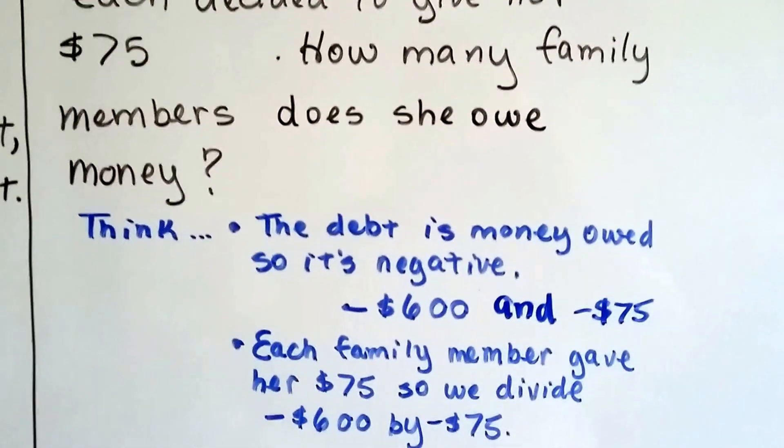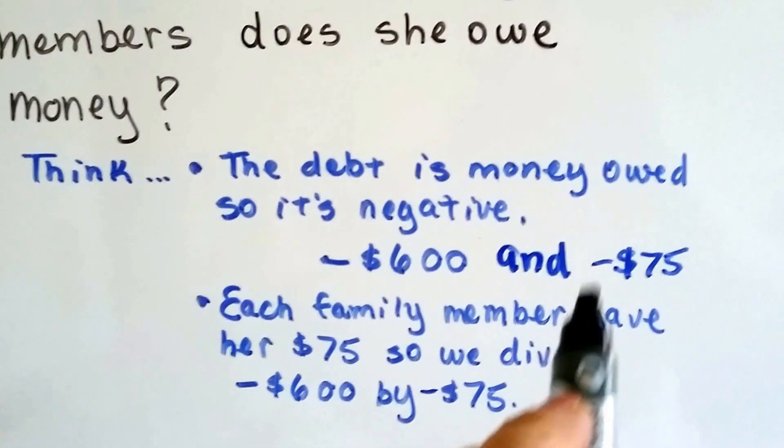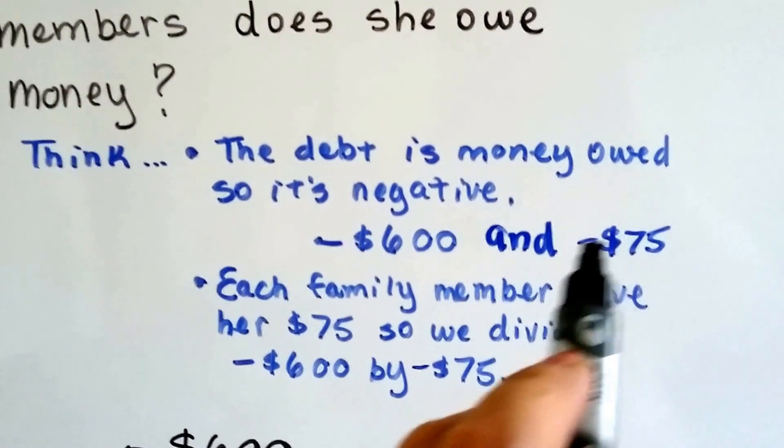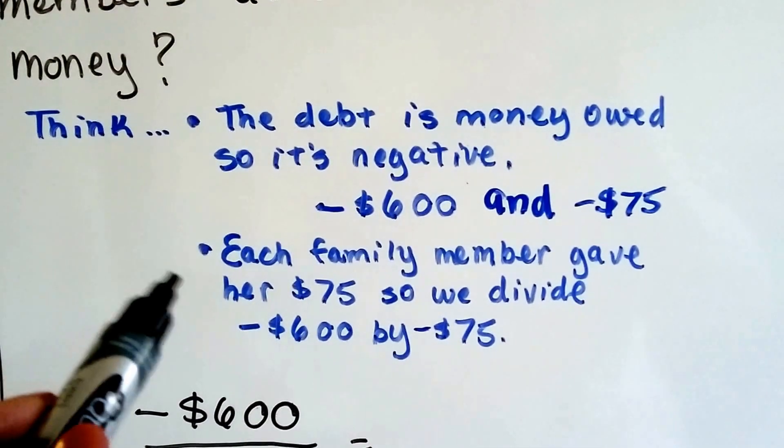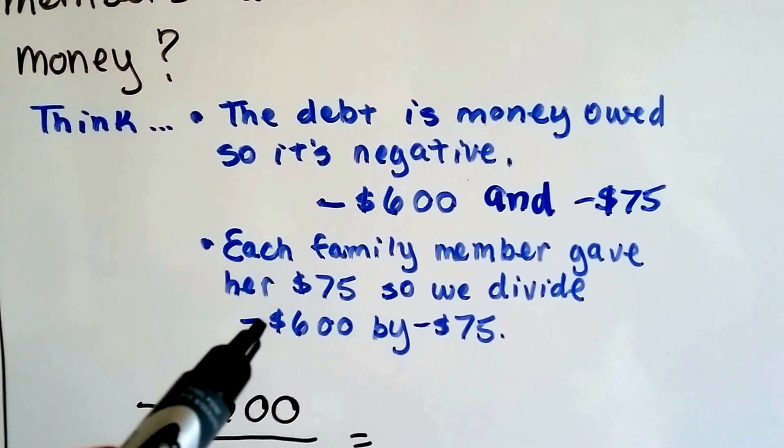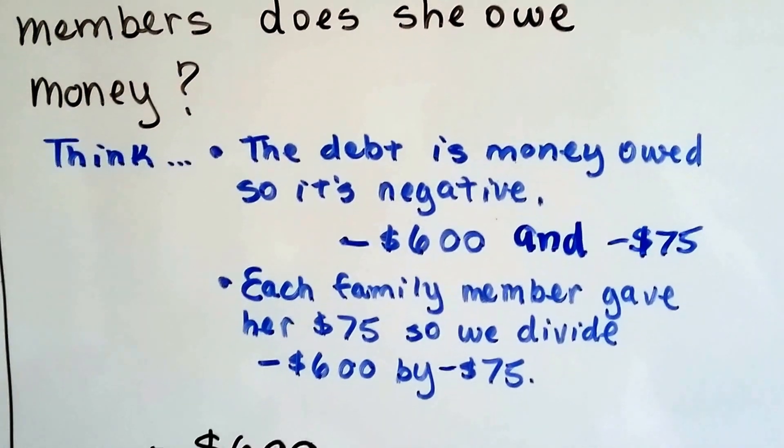Alright, well we think. The debt is money owed, so she's negative $600 to the vet. And now, she's negative $75 to her family members. So we're going to think of it this way. Each family member gave her $75, so we divide the negative 600 by negative 75. That's going to tell us how many family members. Right?